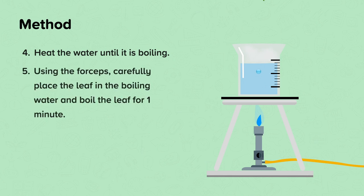Step five, using the forceps carefully place the leaf in the boiling water and boil the leaf for one minute. This step is important because the boiling water kills the leaf, removes the waxy cuticle and disrupts the cell membranes and cell walls. This makes it possible to extract the chlorophyll with ethanol and allows the iodine to penetrate the cells.